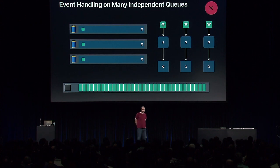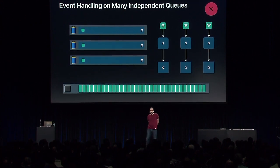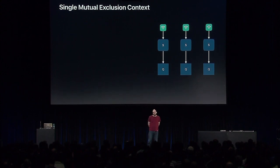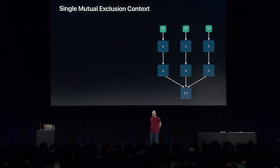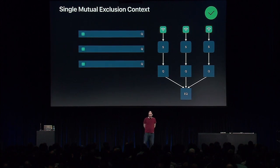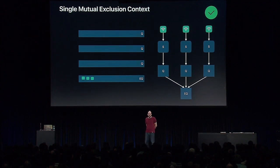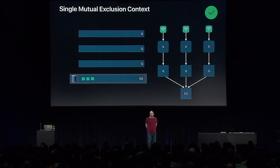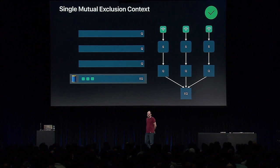We can improve this by applying a single mutual exclusion context — simply by adding a serial queue at the bottom and forming a hierarchy. This gives a single mutual exclusion context for all network connections. If they fire simultaneously, their event handlers get enqueued onto their target queues, but a single thread executes them in order instead of multiple threads. This seems like a simple change, but it's exactly the type of change that led to a 1.3x performance improvement in some of our own code.